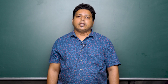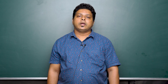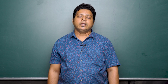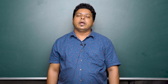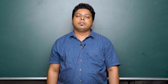Now students, let's take a few more problems to understand the concept of perimeter and area of squares and rectangles in detail. The first problem: find the area and perimeter of a square park whose length is 12 meters. Given the length of the side is 12 meters, area of the square park is side into side, which is 12 into 12, giving us 144 square meters. Perimeter of the square park is 4 into side, which is 4 into 12, giving us 48 meters.